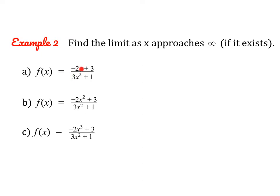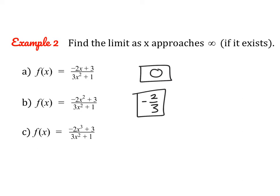These we should be able to do just by looking at them — they're super quick. For the first one, the degree is larger in the denominator, so the limit as x approaches infinity is 0. For the next one, the degrees are the same, so the limit is the ratio of the coefficients: negative 2 thirds. And for the last one, the degree in the numerator is larger than the degree in the denominator, so this limit does not exist.